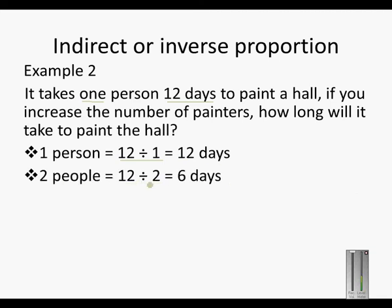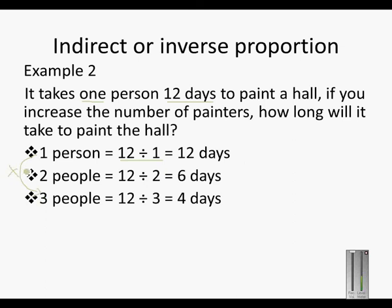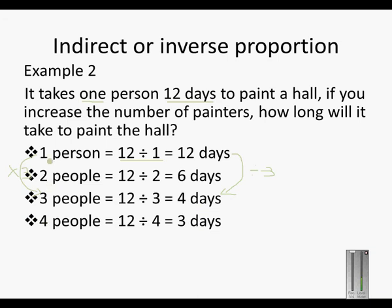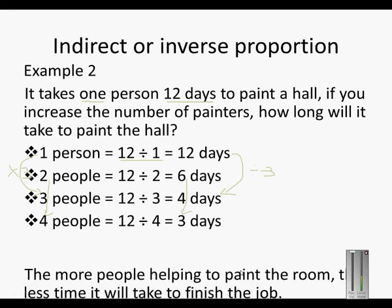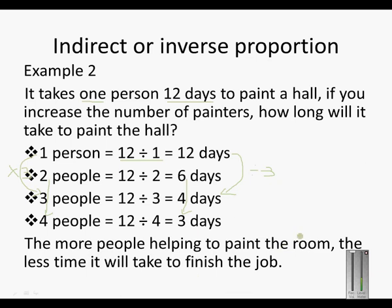Two people: 12 divided by 2 is 6. Do you also see that if I double the amount of people — 1 times 2 — I divide the amount of days: 12 divided by 2. Three people: 12 divided by 3 is 4. Or we can go from 2 directly to 4 — we double the amount of people, and the half of 6 is 3. So the more people helping to paint the room, the less time it will take to finish the job.